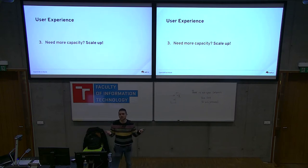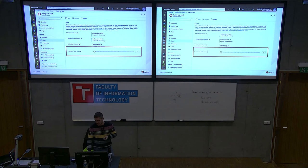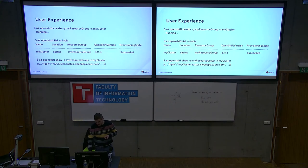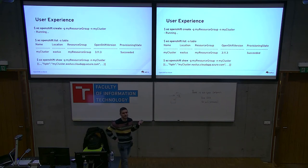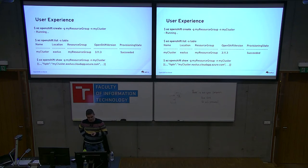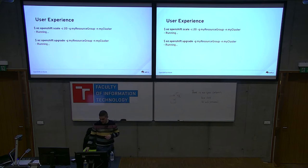If you need more capacity you scale up — it's going to be really intuitive. You'll just use a slider bar or type a number directly, and you scale up. That's it. From the command line you do `az openshift create`, provide your resource group, cluster name, location, and FQDN. You can list clusters, show a description, scale up, and also upgrade — though upgrade is still a work in progress and not yet available in private preview one.